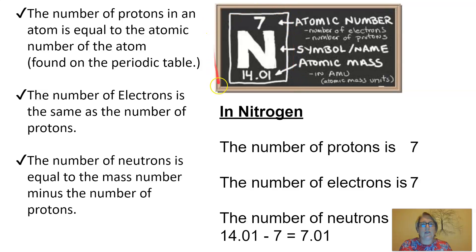If we go back to what is written on the periodic table, let's take nitrogen as an example. The number at the top is the atomic number, and that is an indication of the number of electrons and the number of protons. Then you will either find the symbol or the name of the element. And then underneath that, you find the atomic mass. The number of protons in an atom is equal to the atomic number of the atom, and we find that on the periodic table. The number of electrons is the same as the number of protons. And the number of neutrons is equal to the mass number minus the number of protons.